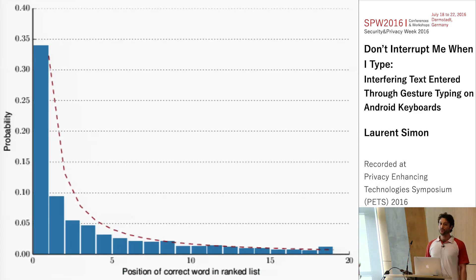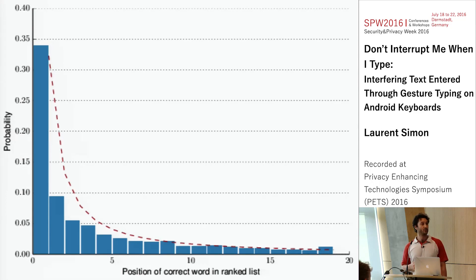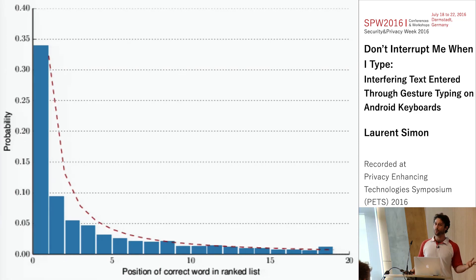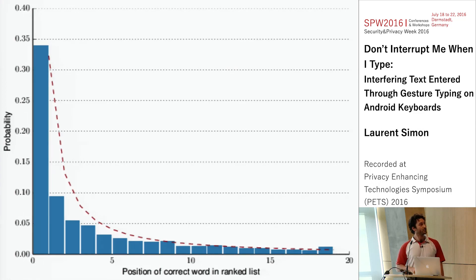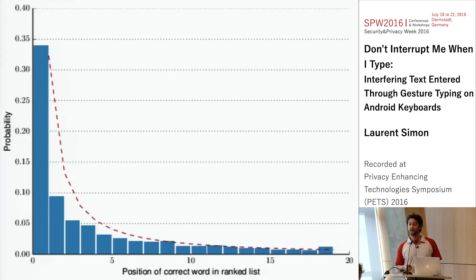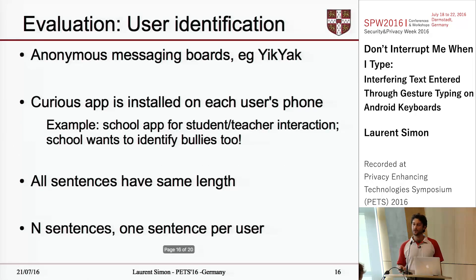During the prediction phase, the RNN gives us a ranked list of the most likely words the user entered, rather than a single prediction. On the accuracy graph, the first bar shows that roughly 34% of the time the correct word appears in first position in the RNN's output list. About 10% of the time the correct word appears in second position, and so on.